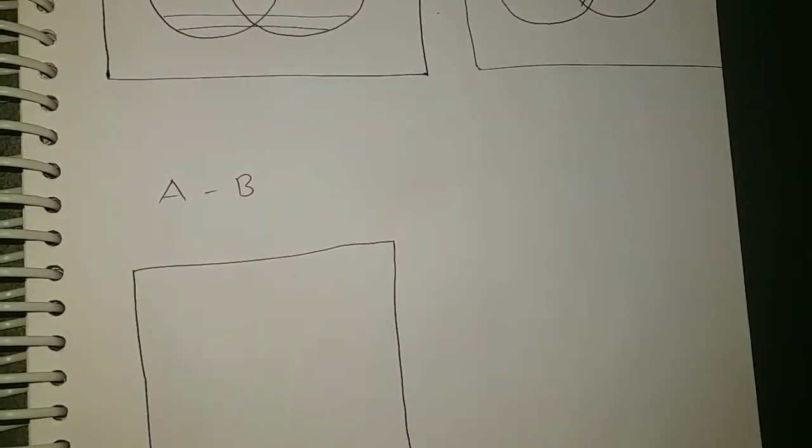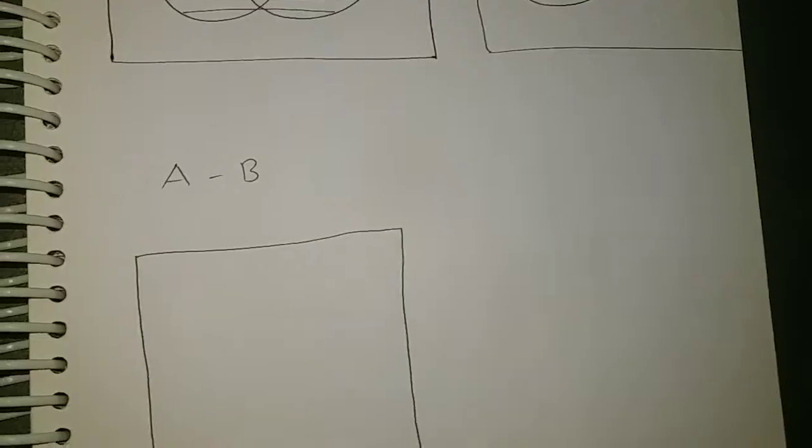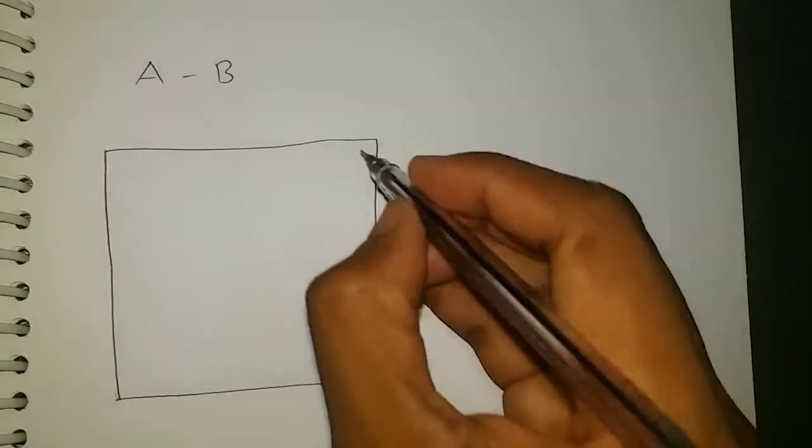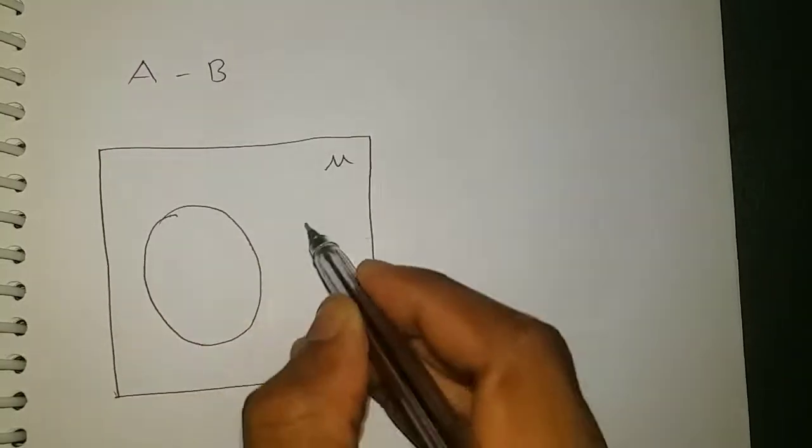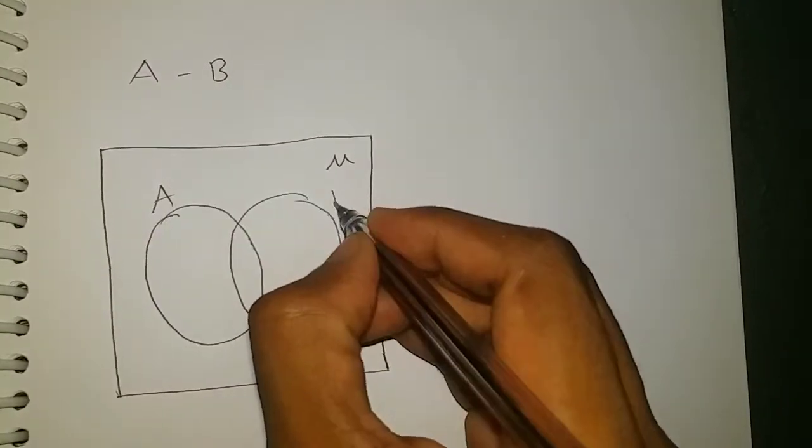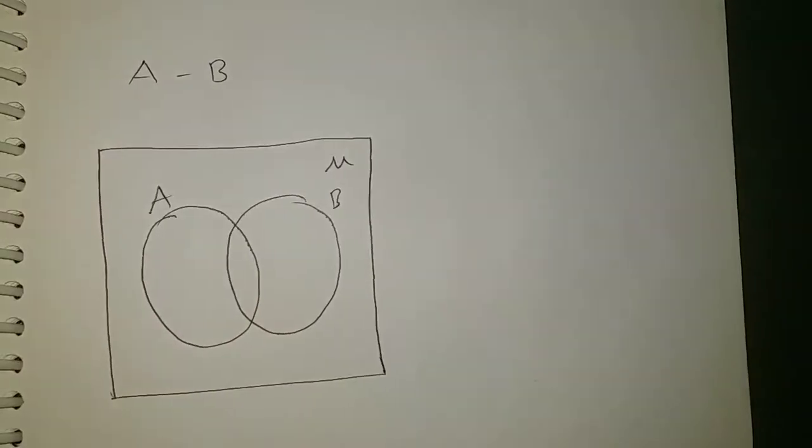Draw the universal set. Draw the universal set and set A and set B. Set A and set B. What is the meaning of A minus B?